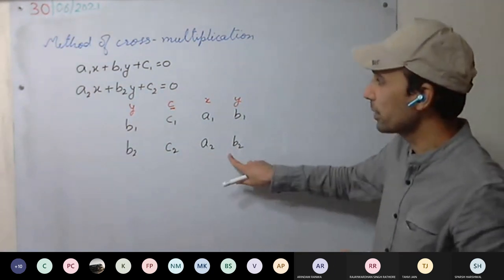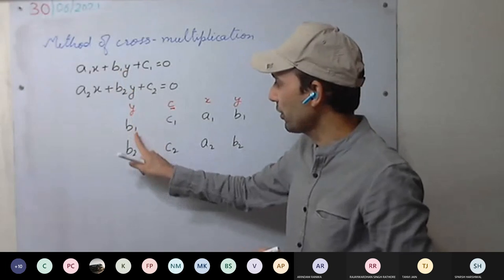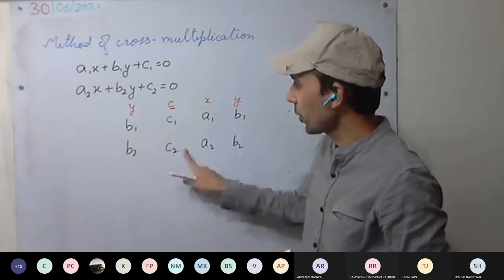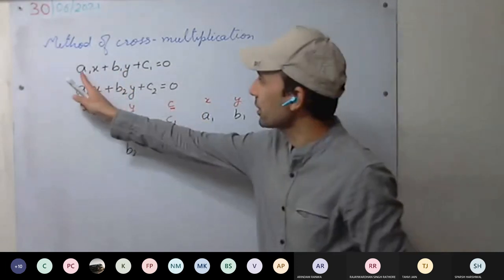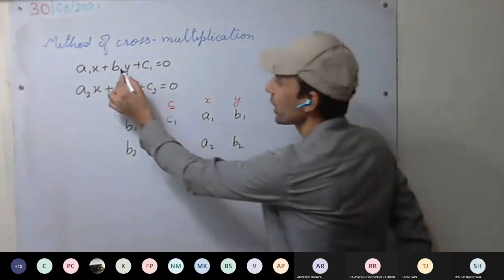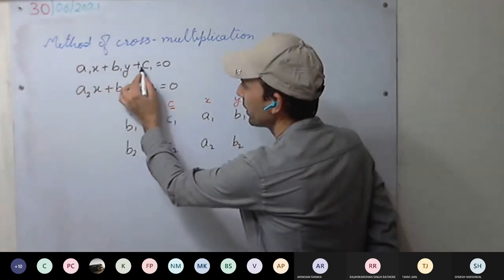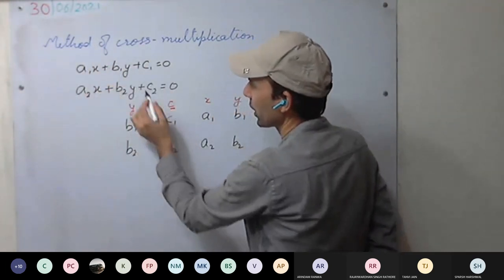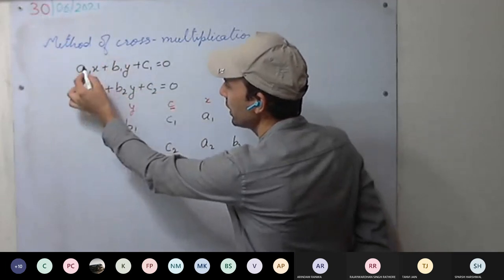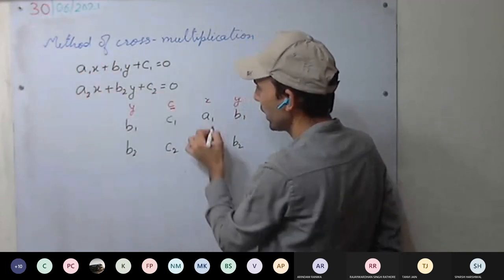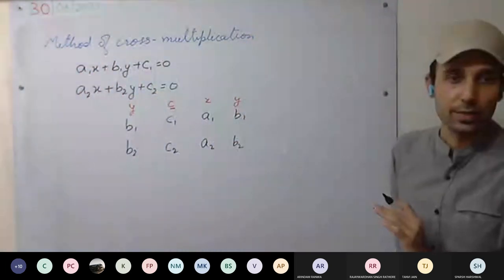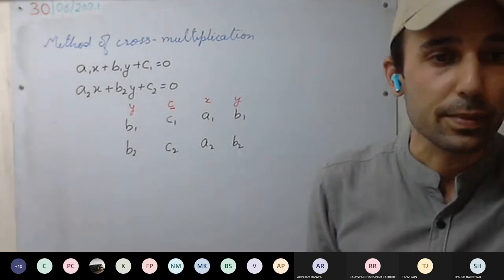So we write in this manner: coefficients of y first, then constant terms, then start again with x coefficients and y coefficients. That is: b1, b2, c1, c2, then a1, a2, b1, b2.